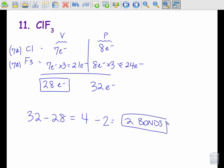So my math is telling me to predict that I'm going to have two bonds in my structure. Now to figure out the central, chlorine and fluorine are very close together. But logic tells us that if there's one chlorine and three fluorines, most likely the one chlorine's in the middle and the three fluorines are around it.